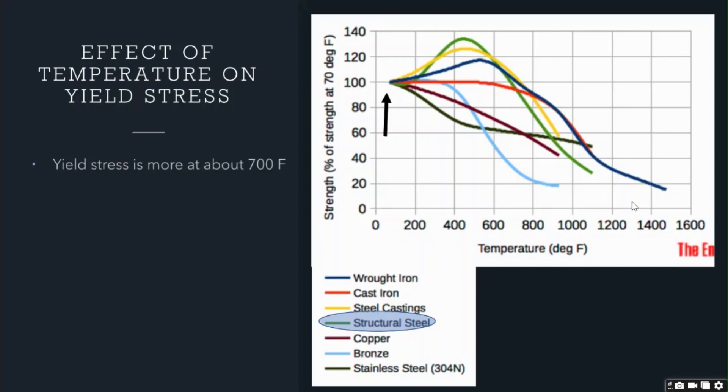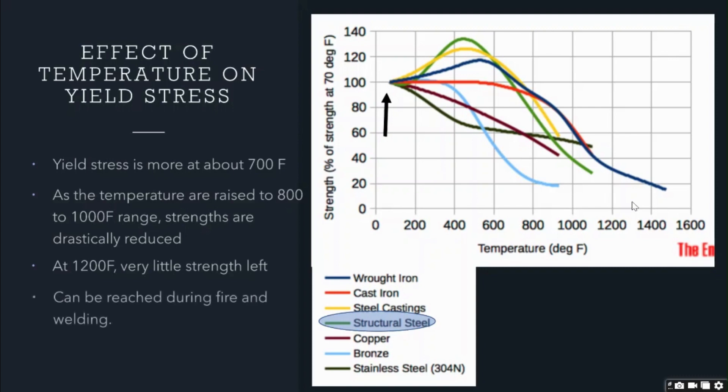If we try to raise the temperature further, say 800 to 1200 Fahrenheit, there is a significant reduction of yield stress in steel. And there is very little strength in steel left at 1200 Fahrenheit temperature, as you can see from the graph. These temperatures can easily be reached in an event of fire or also during welding procedures. This in detail explains the disadvantage of steel regarding fire, as we had discussed earlier.